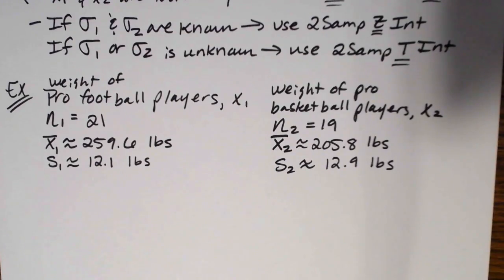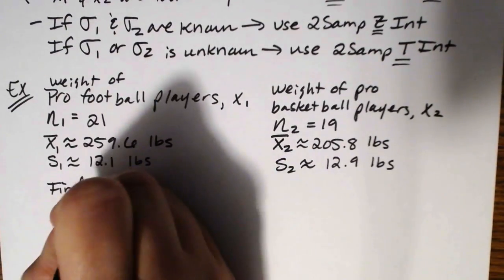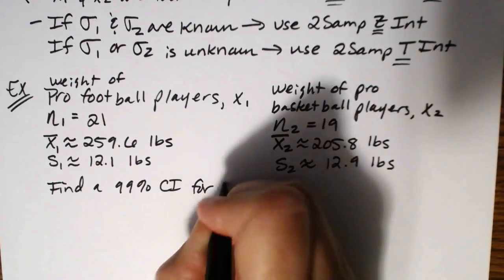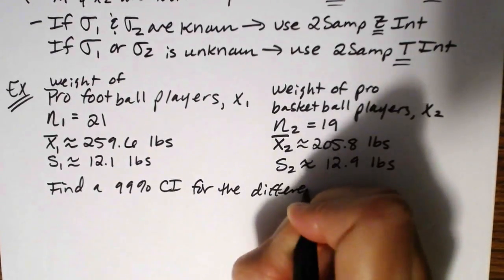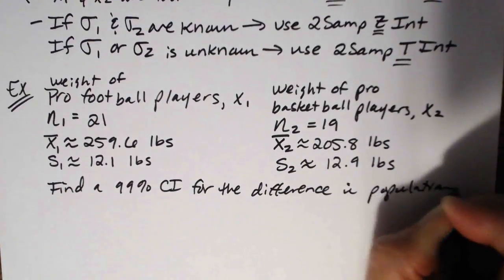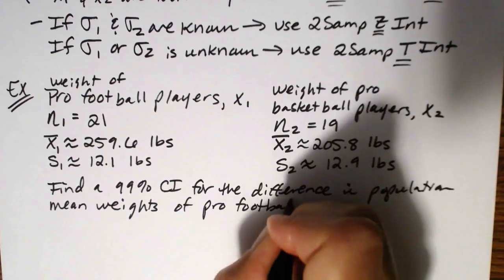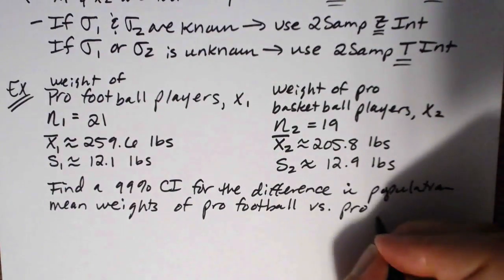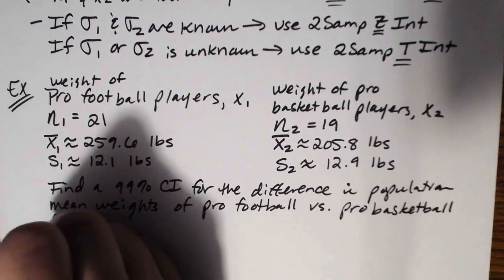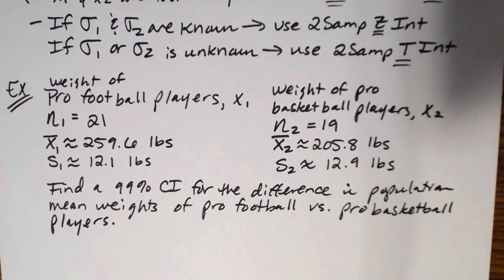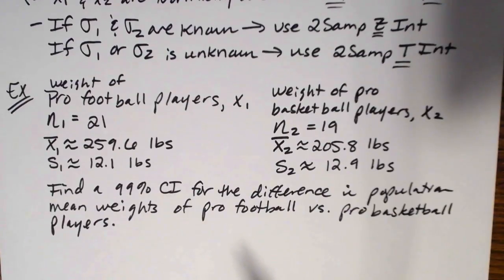That's all of the information we have, and what we're asked to find is a 99% confidence interval for the difference in population mean weights of pro football versus pro basketball players. This is usually used to make a meaningful comparison between the two groups — to figure out which group has the larger or smaller mean, or if they're roughly equivalent.